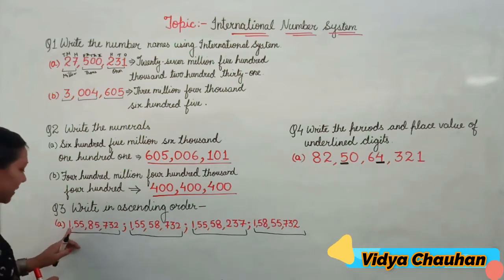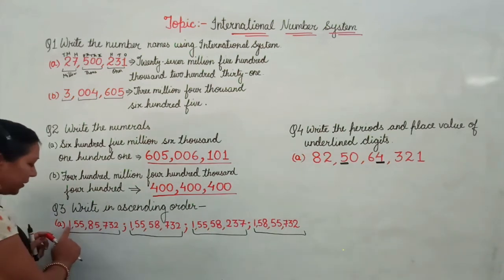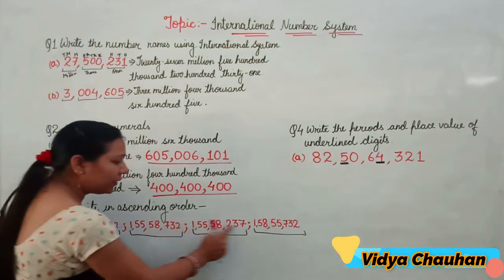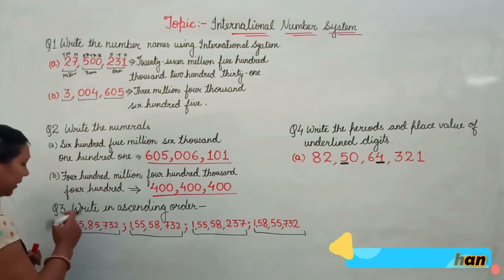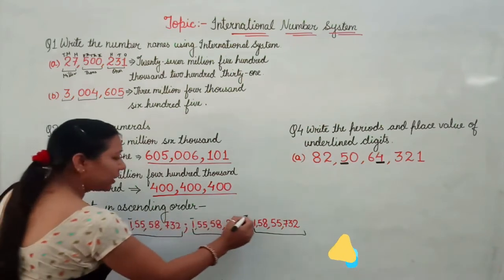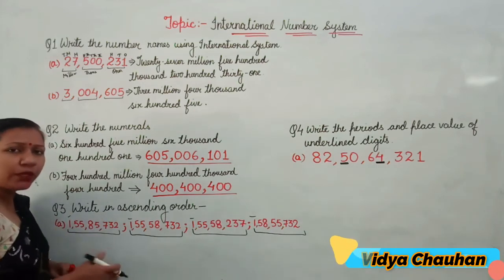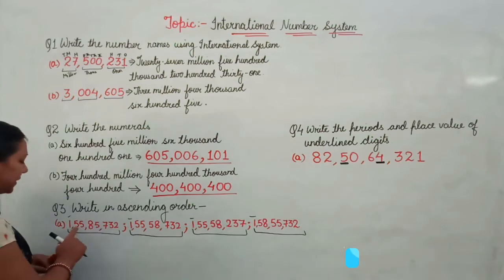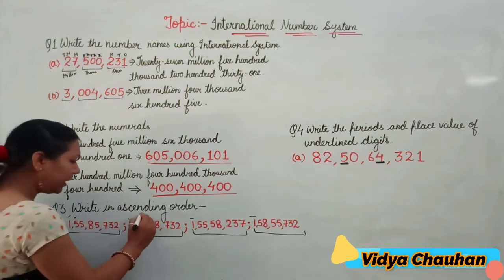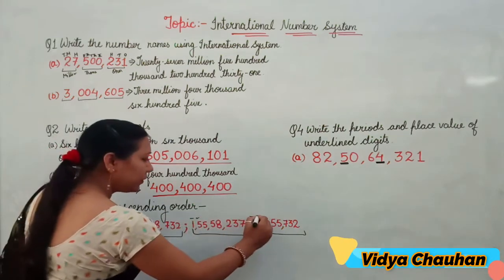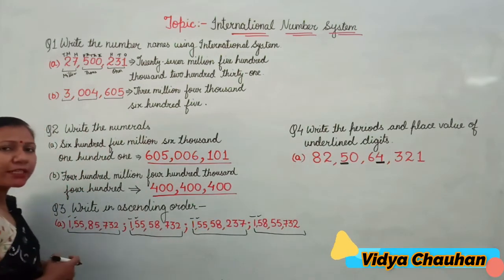Since the crores digits are all equal at 1, we move to the next digit. At the ten-lakhs place, all four values are 5 — also the same. We move to the next place value and compare the digit at the one-lakhs place: 5, 5, 5, and 8. Since 8 is bigger and we want the smallest, we set aside the number with 8 at the lakh place.